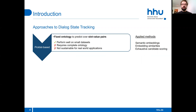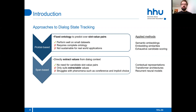These picklist-based approaches perform well on small datasets, but they have some scaling issues. They require a complete ontology, for instance by including all possible booking options, but this is not sustainable for real-world applications. Recently, span-based approaches to DST gained popularity. These methods directly extract values from the dialogue context. Transformer architectures, such as BERT, generate contextual representations that are especially useful for this task.